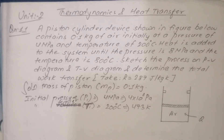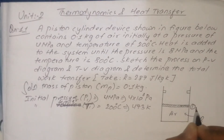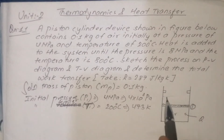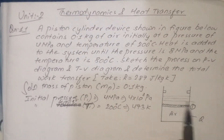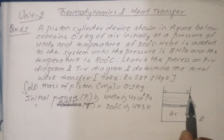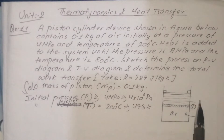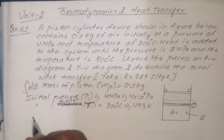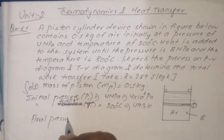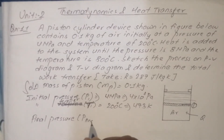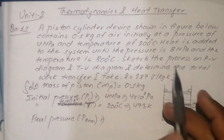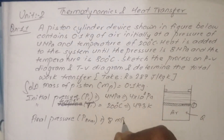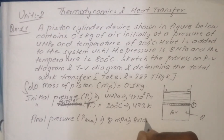Looking at the final conditions: when the piston reaches a certain position, the final pressure is determined. The final pressure is 8 mega pascal, which equals 8 into 10 to the power 6 pascal. This is the final pressure value.